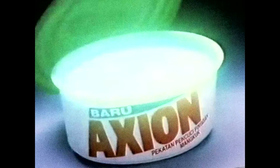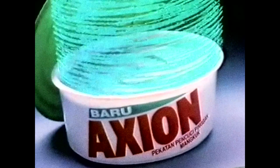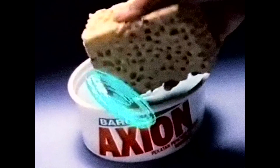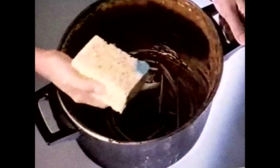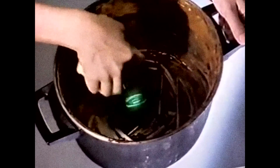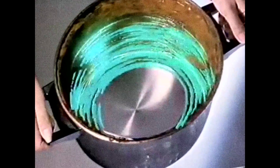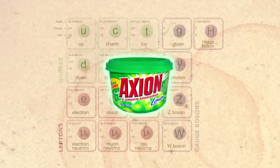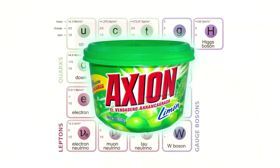They're called axions. Axion was originally the name of a brand of washing powder, and the name was given to the particle because they clean up a mess that exists in the strong interaction.